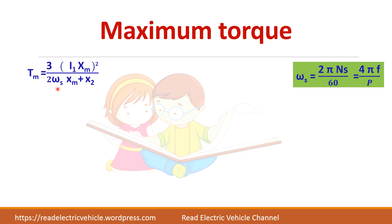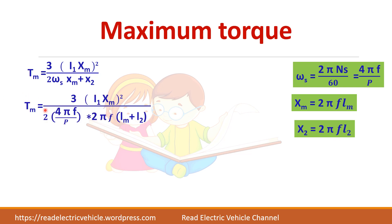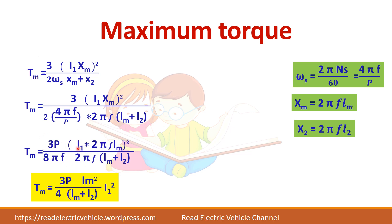Here ωS equals 2πNs/60 and Ns equals 120F/P. Substituting these and expressing Xm and X2 in terms of frequency allows us to simplify the torque equation. The result is: maximum torque equals (3P / 4) × Lm² / (Lm + L2) × I1². In other words, the maximum torque is directly proportional to I1². By controlling the stator current, we are able to control the maximum torque.